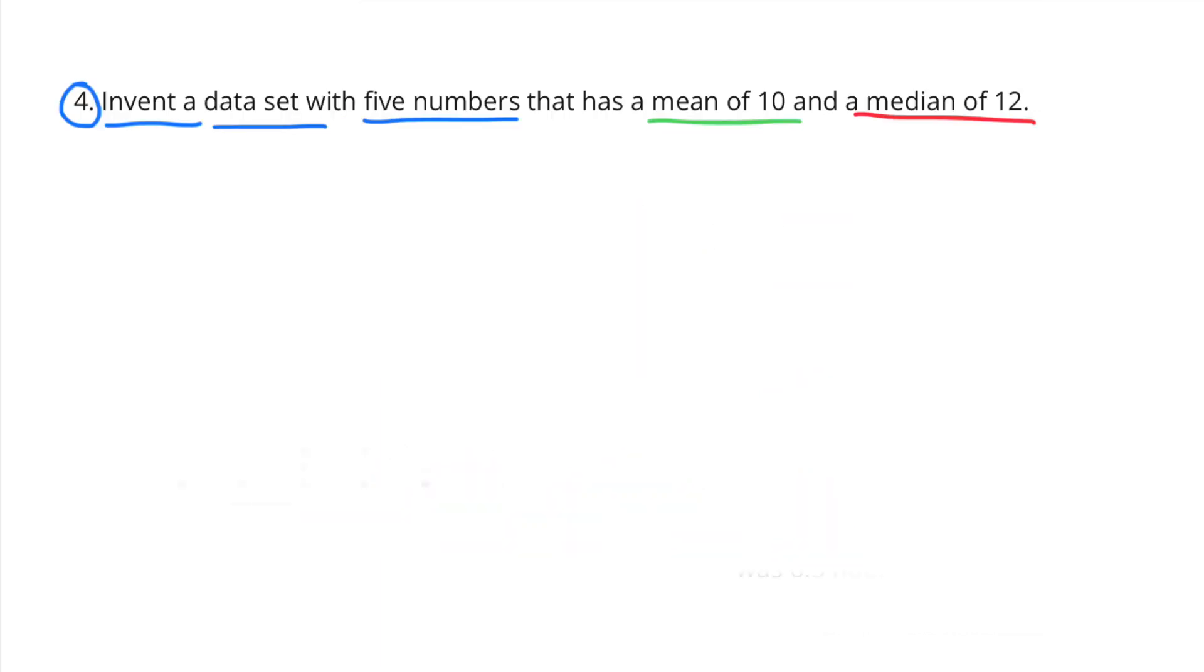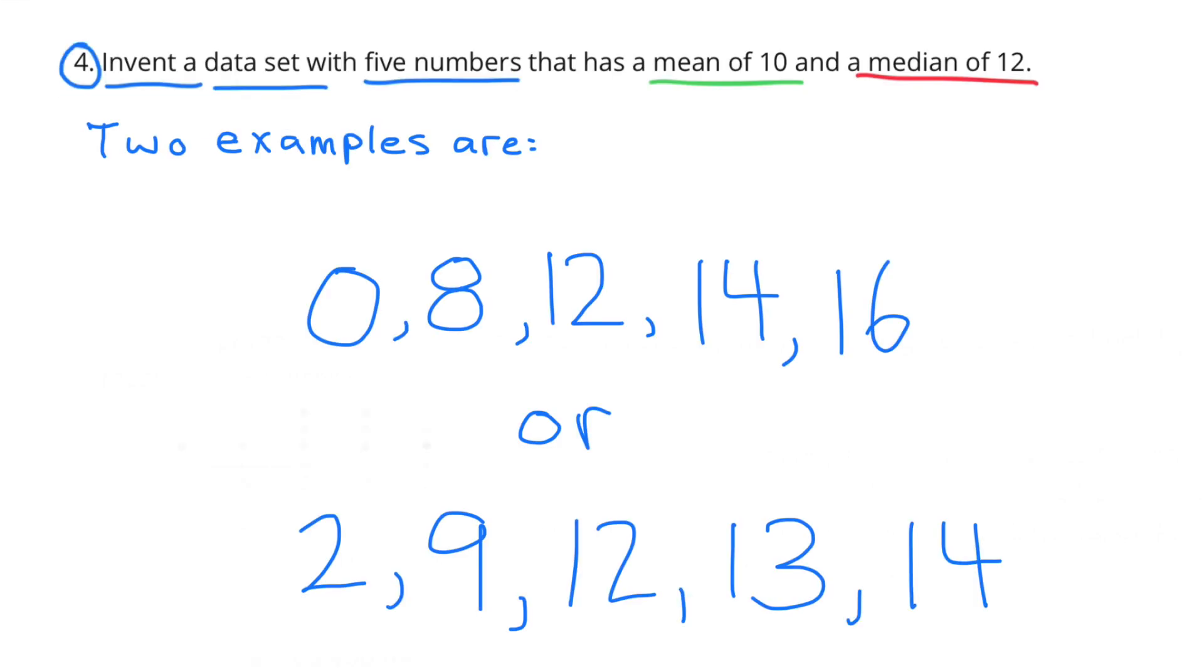Number four: Invent a data set with five numbers that has a mean of 10 and a median of 12. There are many examples that you can come up with, and here are two examples: 0, 8, 12, 14, and 16, or 2, 9, 12, 13, and 14. The median is pretty easy to pick out. You can see that 12 is the middle number in each of these sets. The mean is a little bit more difficult. We'd have to add up every single piece of data and then divide it by 5.